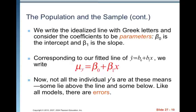Corresponding to our fitted line of Y hat equals B naught plus B1X, we would write mu Y equals beta naught plus beta 1X. Now, not all the individual Y's are at these means. Some lie above the line and some lie below.